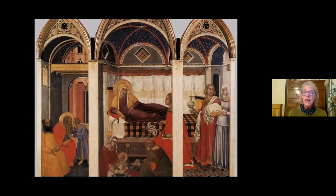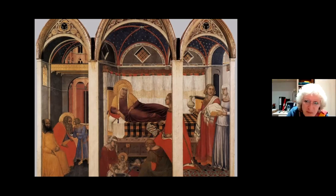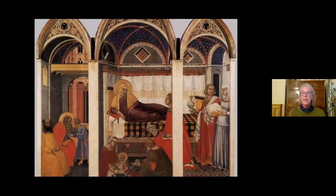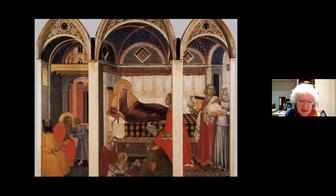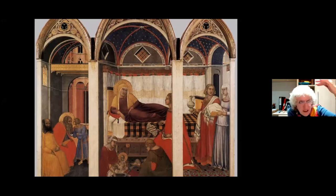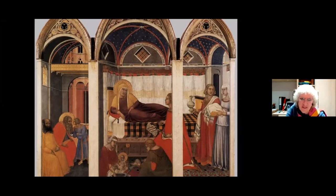One thing that struck me in the last picture in the Santa Maria della Scala was the perspective — and that comes through with the textiles. You can actually see the textiles because of the perspective, the use of perspective going up the roofing, the background, the bedding — it all gives depth.